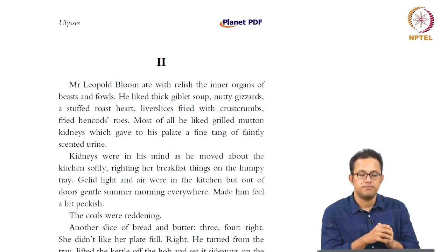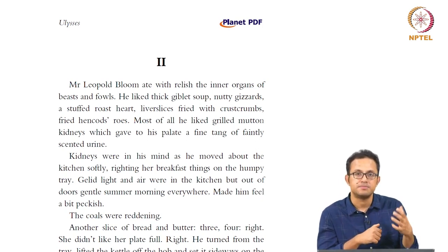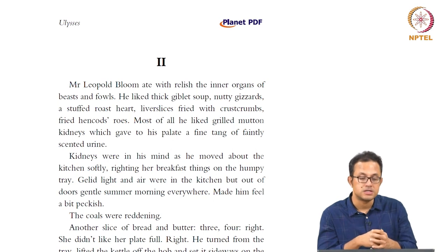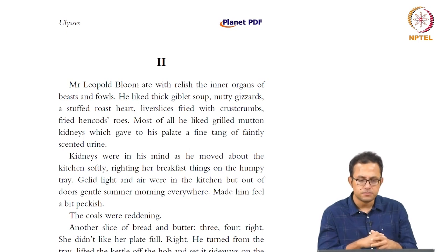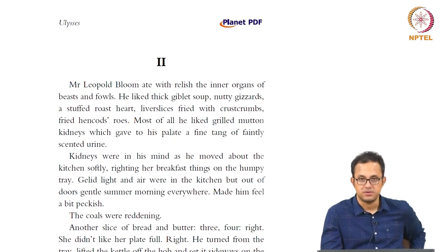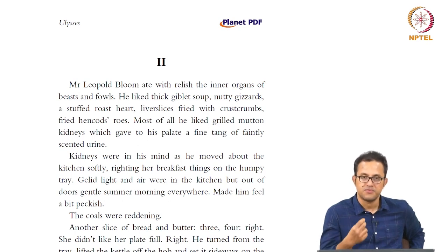We see in the section where Bloom appears for the first time different kinds of food metaphors, especially meat metaphors — different kinds of meat being consumed. The constant connection to Jewishness is something we should never lose sight of in this section. The very first sentence has almost a cannibalistic quality: 'Mr. Leopold Bloom ate with relish the inner organs of beasts and fowls.' He eats the inner organs of beasts and fowls — it is almost like a carnivore or cannibal. The consumption narrative is very much foregrounded in Ulysses.